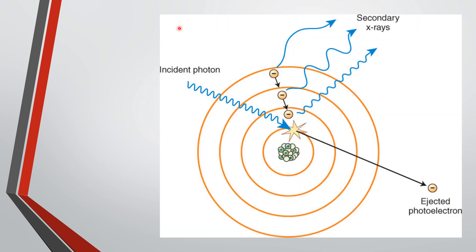Looking at the photoelectric effect diagram: the incident photon comes into the atom and interacts with an inner shell electron. Having more energy than the binding energy, it knocks out this photoelectron. Outer shell electrons fill in the hole, and because there's an energy difference between shells, the atom releases a characteristic x-ray — known as a secondary x-ray. This just adds to the patient dose and adds nothing of value to the image.